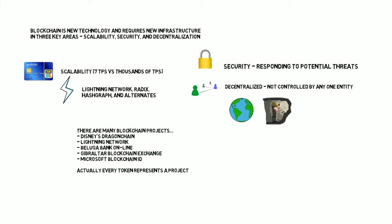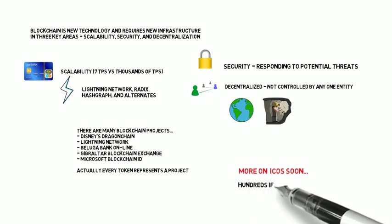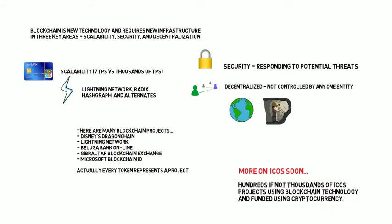There are lots of projects out there — big ones like Disney's Dragon Chain, the Lightning Network, Beluga Bank Online for giving developing countries access to capital, Gibraltar Blockchain Exchange, and Microsoft Blockchain ID. Big names and small, lots of people are involved. Tokens are associated with these projects as cryptocurrency tokens. We'll look more at the ICO — the initial coin offering — in an upcoming video blog. People are raising huge amounts this way: $15 million, $30 million. These are people who in the past wouldn't have had access to funding because they weren't part of the venture capital network or the banking inside circle. This is a big change in democratizing financing and allowing people around the world access to funding.